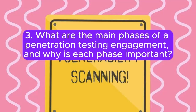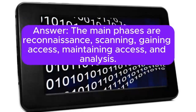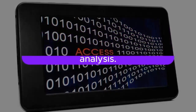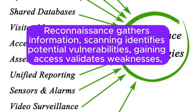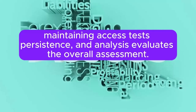Question 3: What are the main phases of a penetration testing engagement, and why is each phase important? Answer: The main phases are reconnaissance, scanning, gaining access, maintaining access, and analysis. Reconnaissance gathers information, scanning identifies potential vulnerabilities, gaining access validates weaknesses, maintaining access tests persistence, and analysis evaluates the overall assessment.